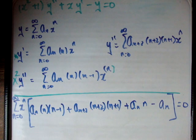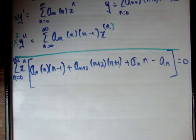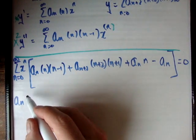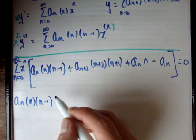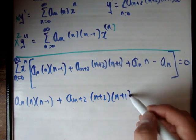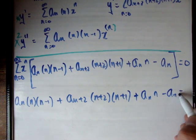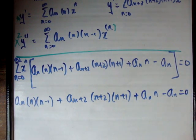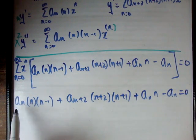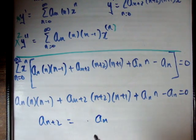As you know, when you have two things multiplied together to get 0, one of them must be 0. So in this case the bracketed expression is equal to 0. So we get: a sub n times n times n minus 1, plus a sub n plus 2 times n plus 2 times n plus 1, plus a sub n times n, minus a sub n equals 0. We can see we have a sub n plus 2 and a sub n, and what we want is a sub n plus 2 expressed in terms of a sub n.